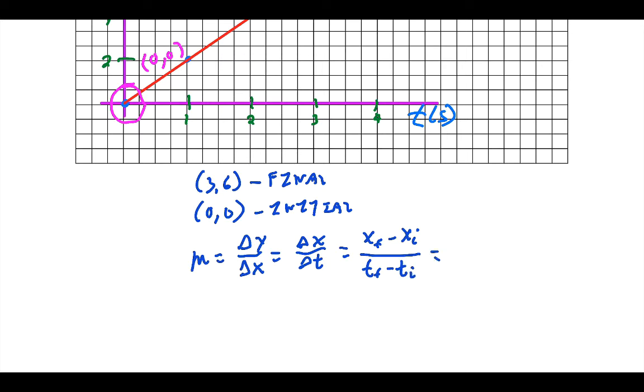If I look at my numbers here, my final value for the distance of the points I picked was six, the initial zero. The final value for the time was three, the initial was zero, which gives me six over three, which gives me two.